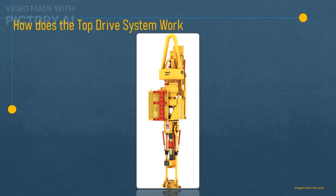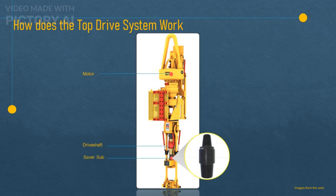How does this system work? As the top drive motor turns, it rotates the drive shaft, which is attached to a saver sub — a threaded pipe at the bottom of the top drive. The saver sub then rotates the drill string and the drill bit, which break up the rock formation.